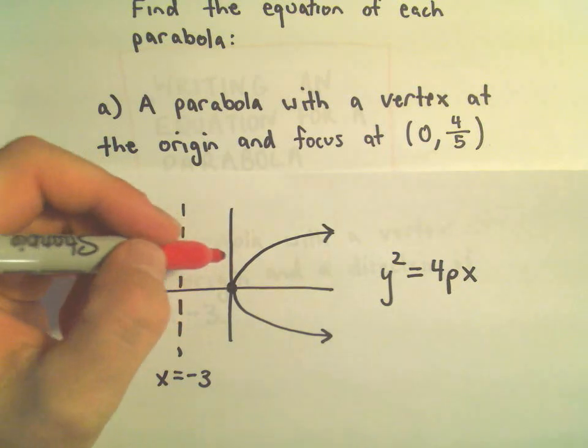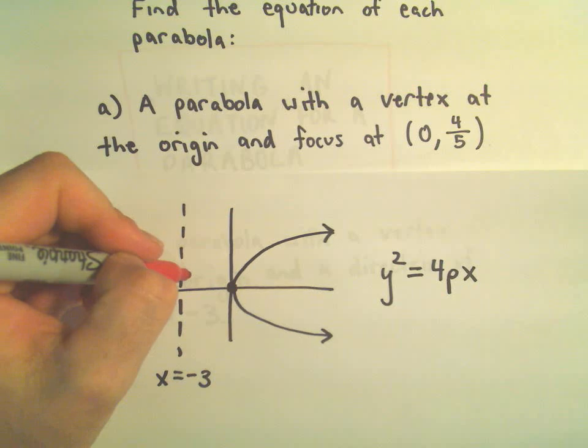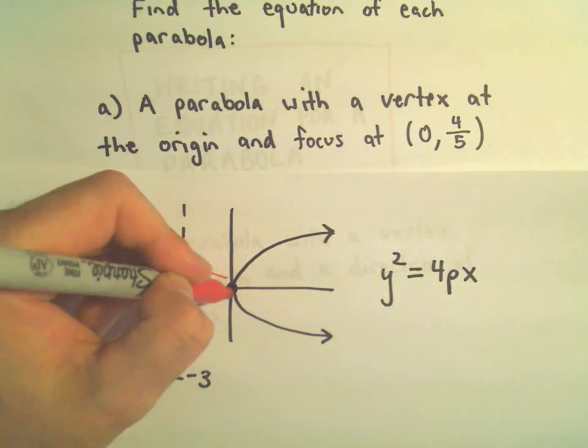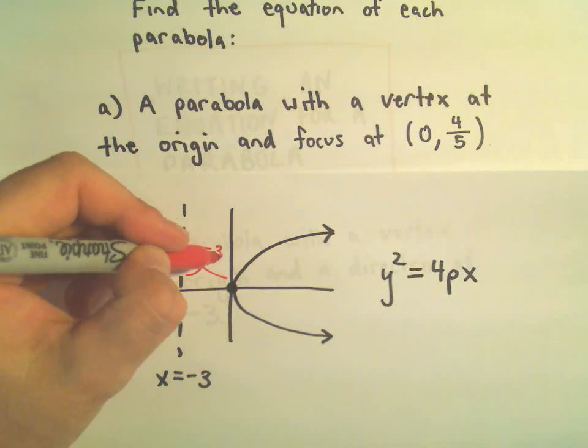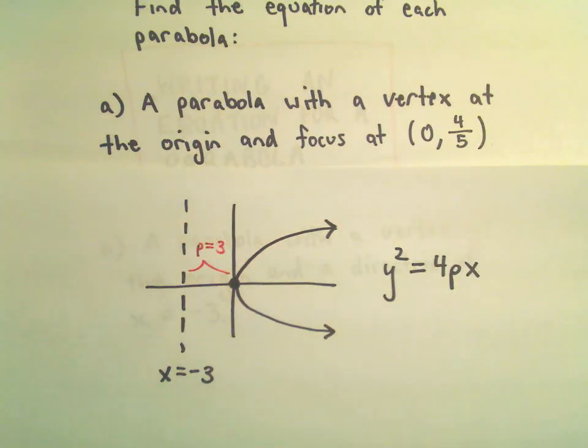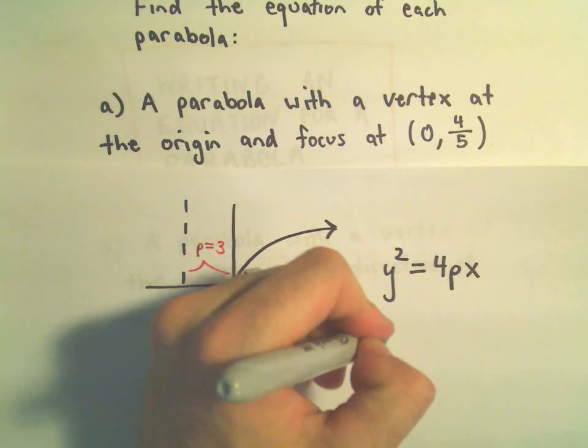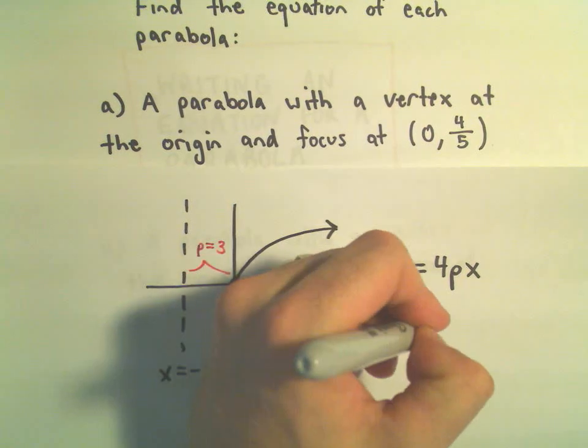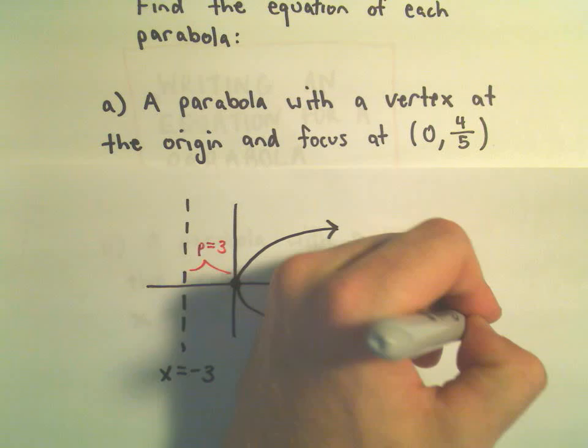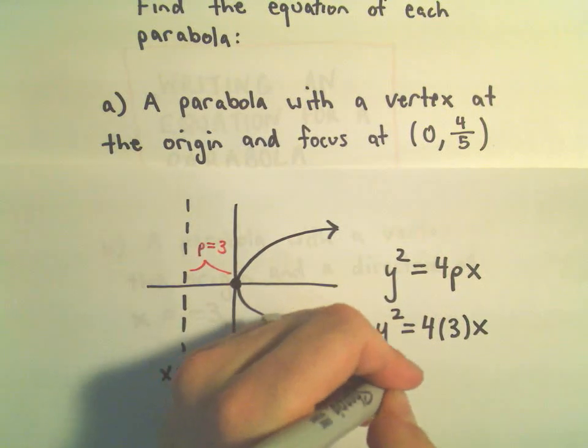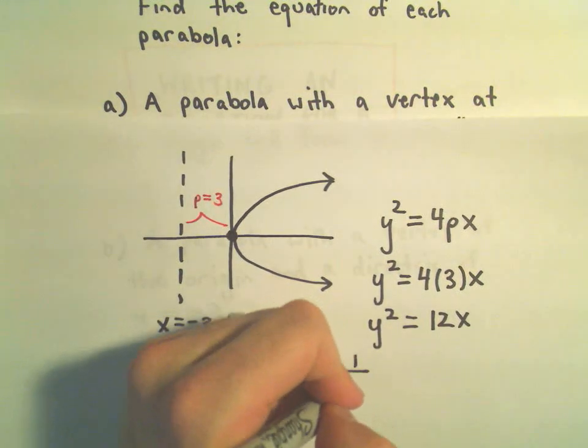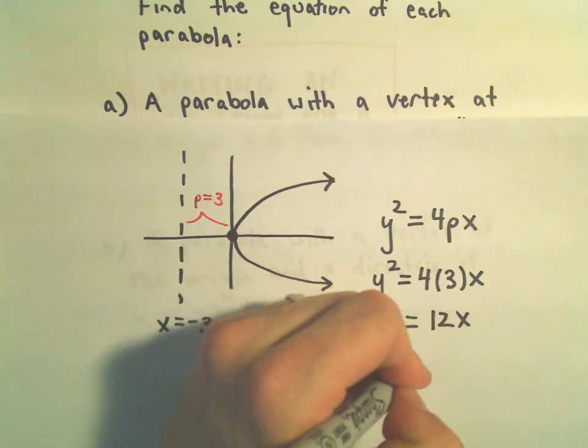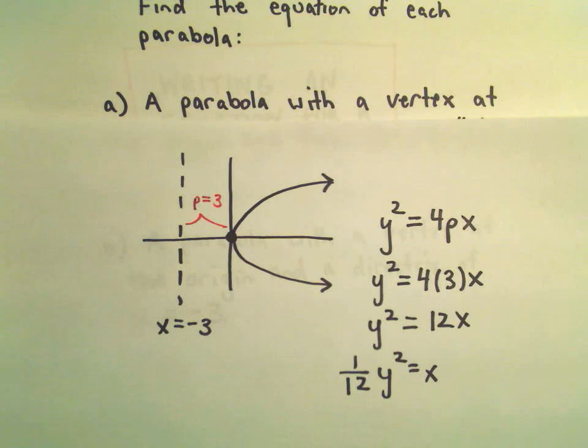And again, the only thing, the way I think about p is, p is basically the distance from my vertex to my directrix. So in this case, my p would have a value of three, and it says we would get y squared equals four times three times x, or we would get y squared equals twelve x. Equivalently we could just divide both sides, we would get one twelfth of y squared equals x, and again, now we've got the equation of our parabola.